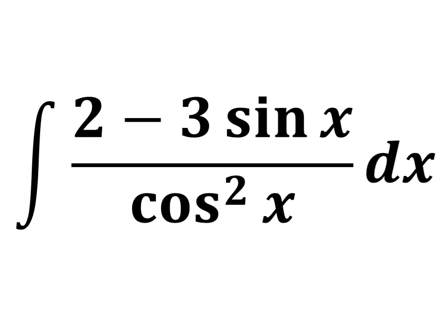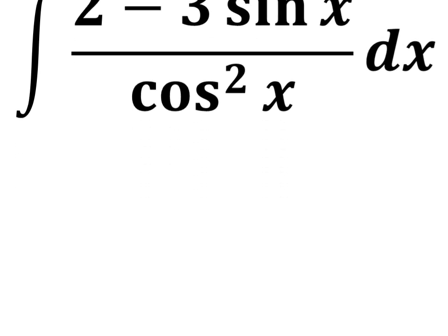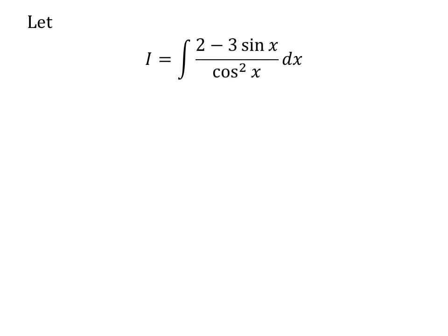In this video, we will learn to find the integral of 2 minus 3 times sine of x upon square of cosine of x. Let I be equal to integral of 2 minus 3 times sine of x upon square of cosine of x with respect to x.